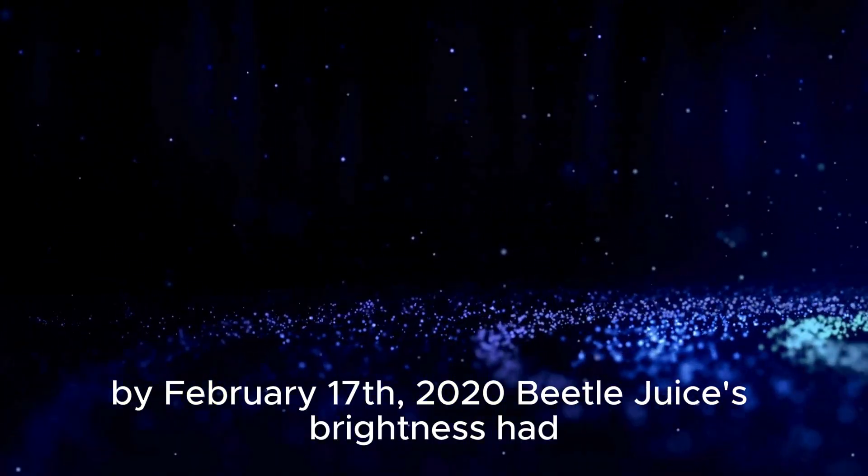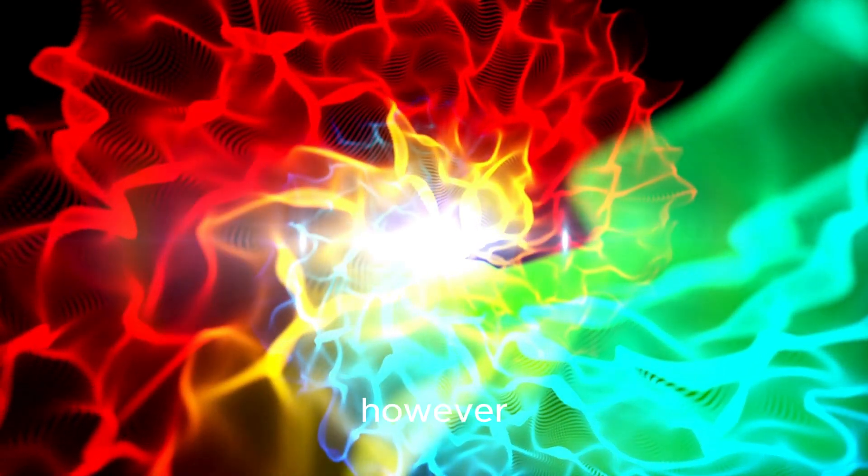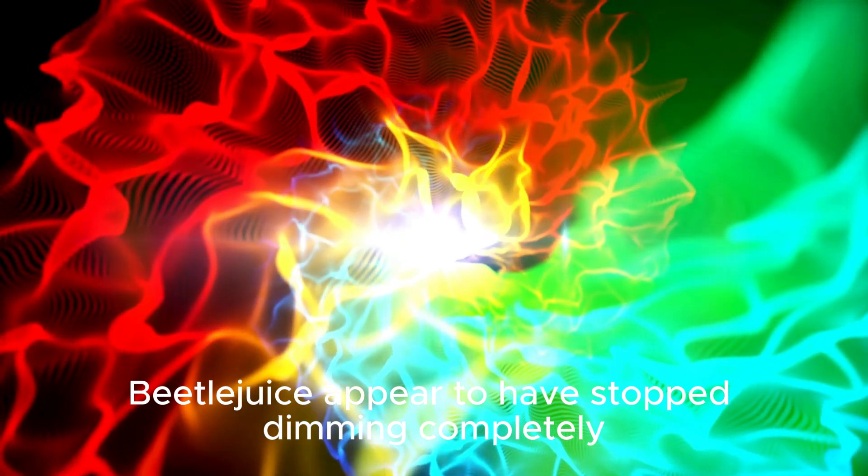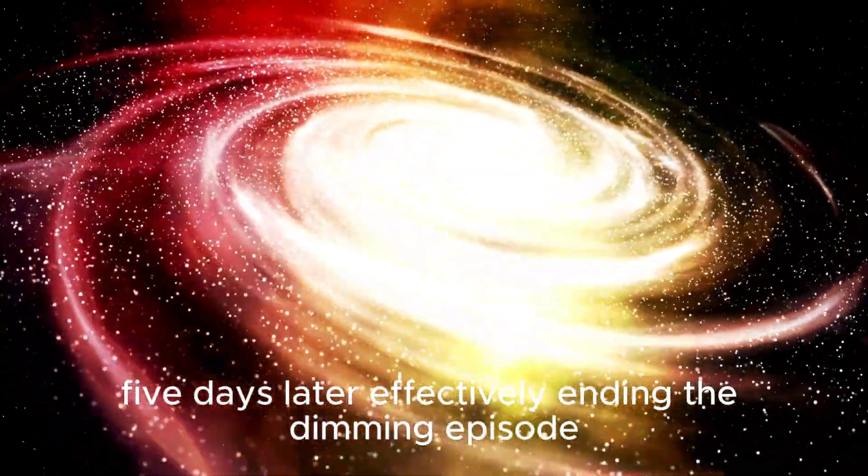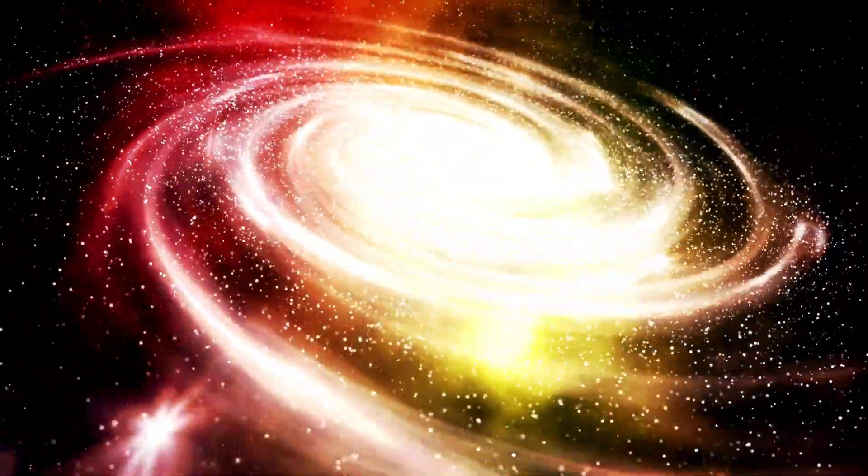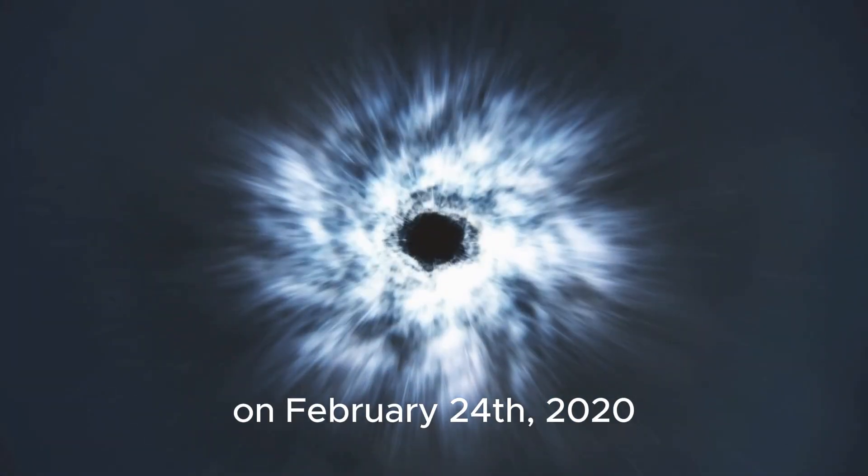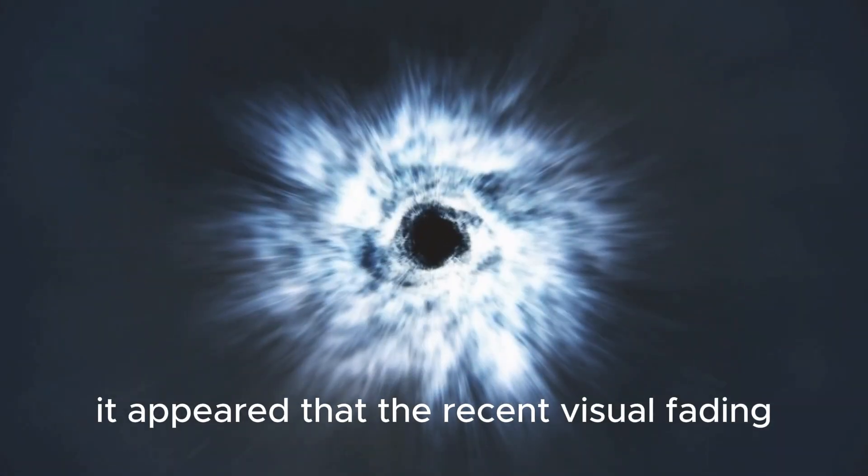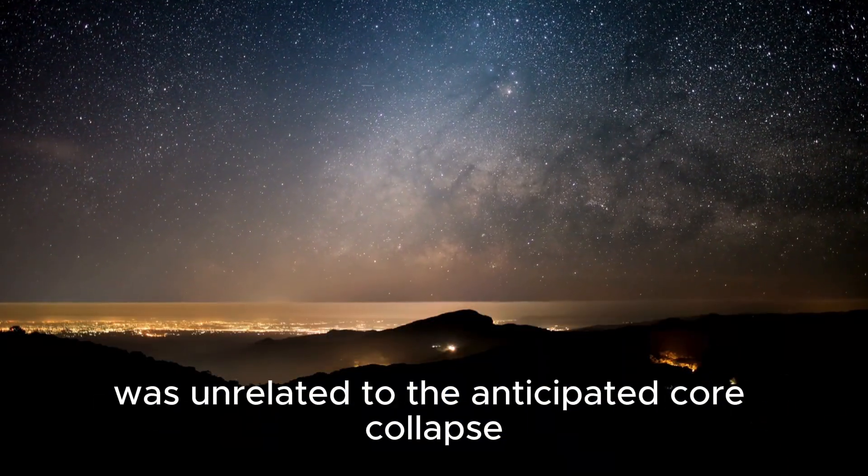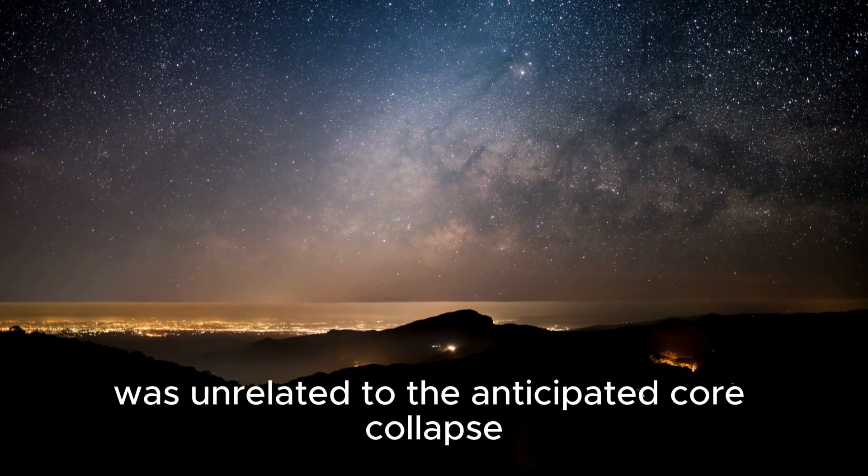By February 17, 2020, Betelgeuse's brightness had been stable for almost 10 days, and the star had started to brighten once more. However, Betelgeuse appeared to have stopped dimming completely five days later, effectively ending the dimming episode. Given that there were no significant changes in the infrared on February 24, 2020, it appeared that the recent visual fading was unrelated to the anticipated core collapse.